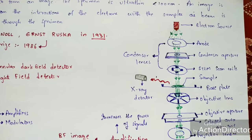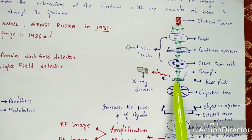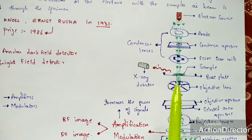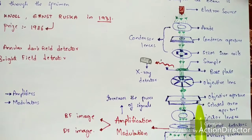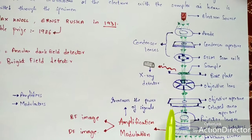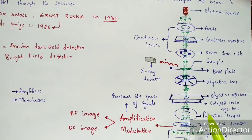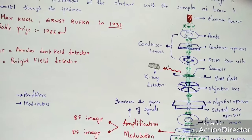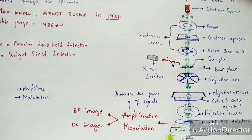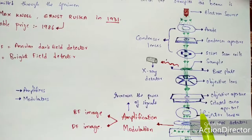The electrons interact with the sample on the base plate and pass upon the objective lens. From the objective lens, the electron beam passes to the objective aperture, selected area aperture, and projector lenses. The projector lens projects the type of imaging — it helps in the production and viewing of the image on the screen, where a particular type of image can be found.